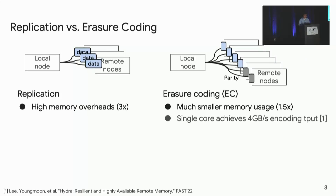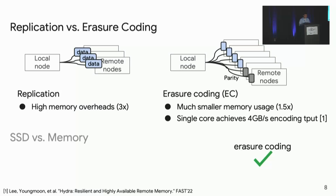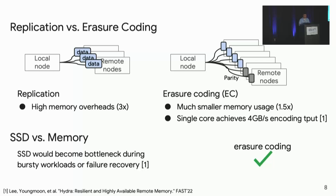Erasure coding runs fast on commodity servers, around four gigabytes per second using a single core. Considering memory usage, we prefer erasure coding for far memory. You might think of using SSD to store replicas or parity data — this does save memory, but it bottlenecks application performance, especially during bursty workloads and failure recovery, as demonstrated by prior work. Therefore, we prefer in-memory fault tolerance for far memory.